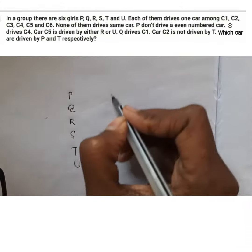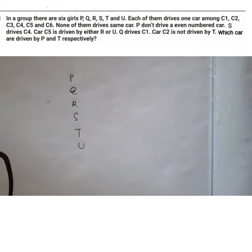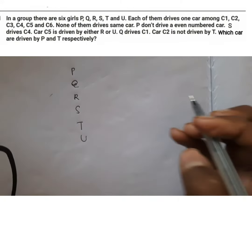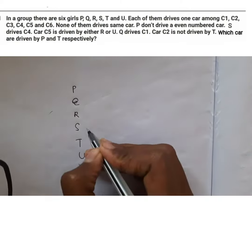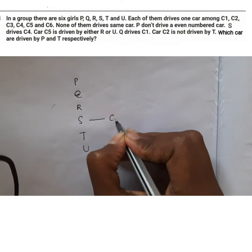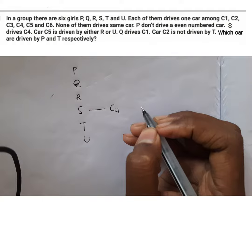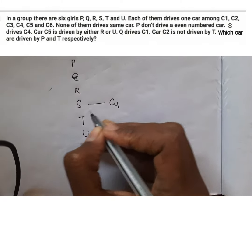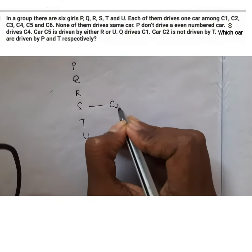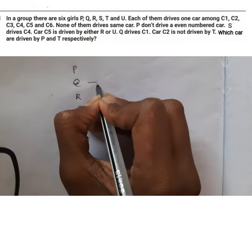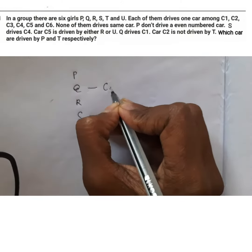Now, in the second line, it is given that S drives C4. First of all, we try to find out all the information that is fixed. S is fixed with C4 and in the third line, Q is fixed with C1.